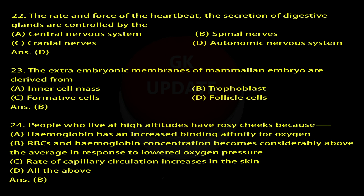Question 22: The rate and force of the heartbeat and the secretion of digestive glands are controlled by the — A. Central nervous system, B. Spinal nerves, C. Cranial nerves, D. Autonomic nervous system. Answer: D.